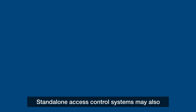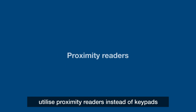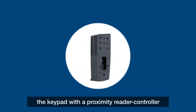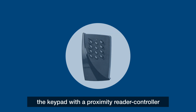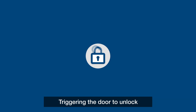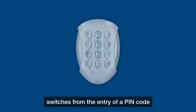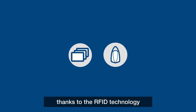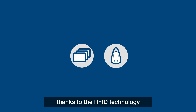Standalone access control systems may also utilize proximity readers instead of keypads. A proximity system simply replaces the keypad with a proximity reader controller. Triggering the door to unlock in this case switches from the entry of a pin code to the presentation of a proximity fob, card, or tag thanks to the RFID technology.